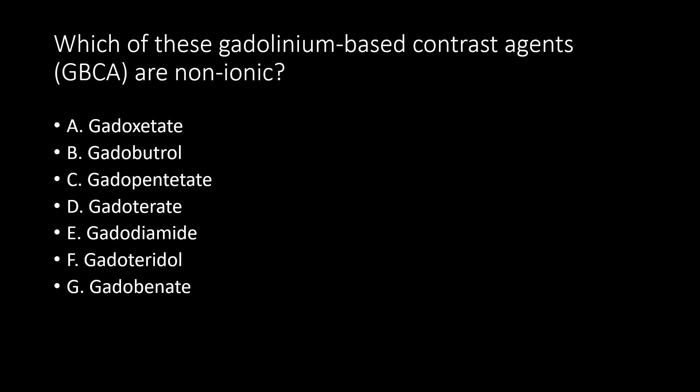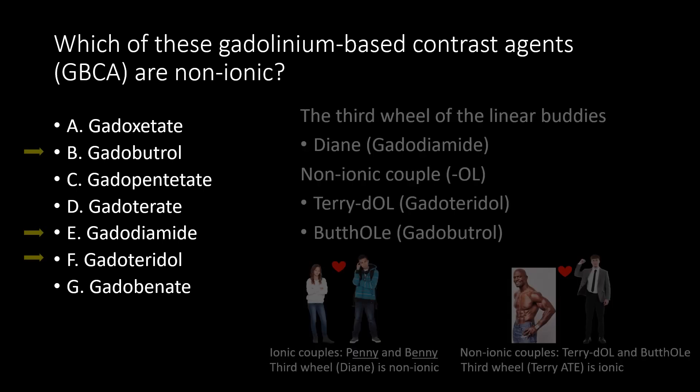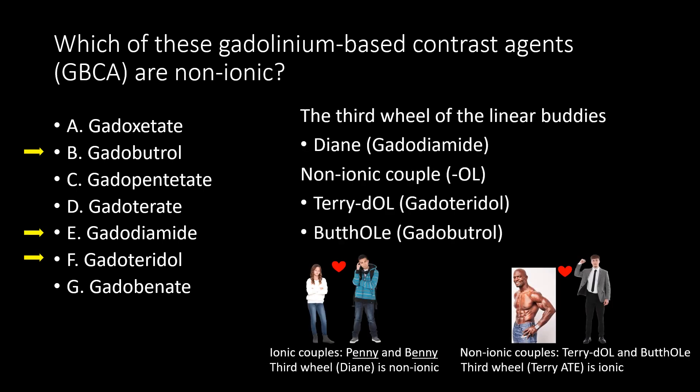Which of these gadolinium-based contrast agents are non-ionic? There are multiple answers. The third wheel of the linear buddies, Diane, is non-ionic. And then the non-ionic couple — gadoteridol and gadobutrol. These are the non-ionic ones.